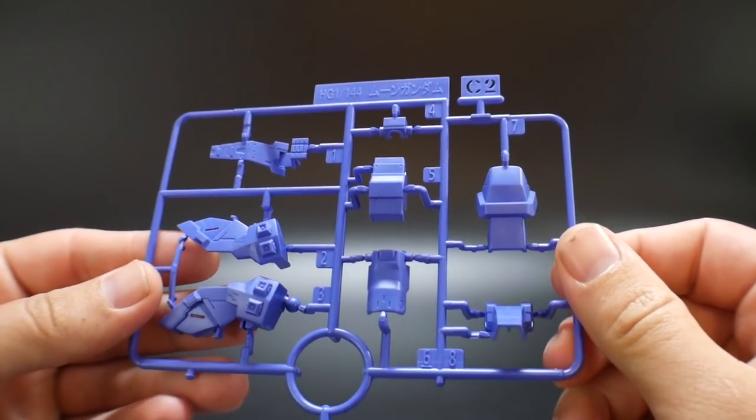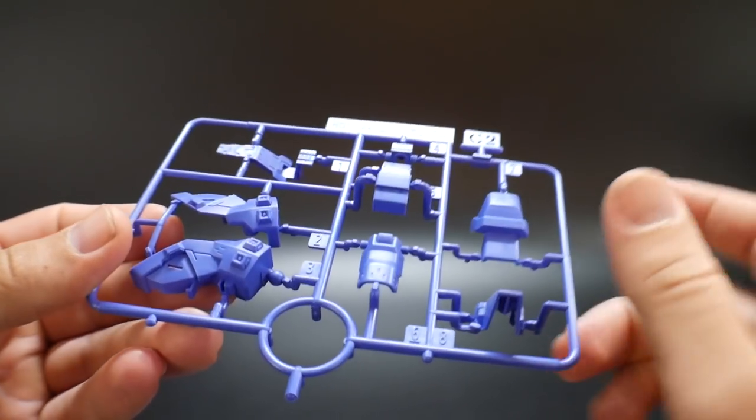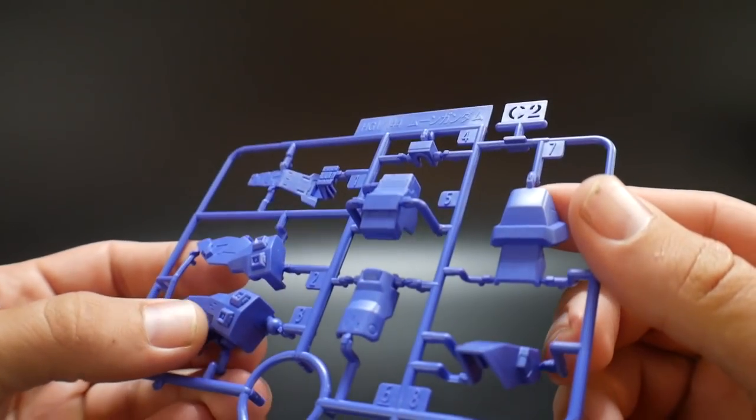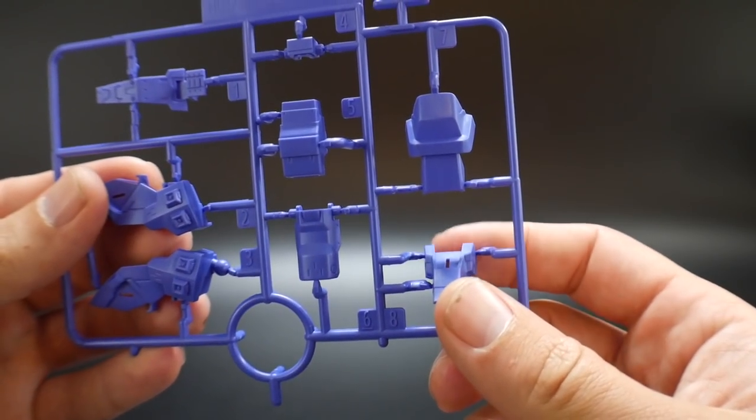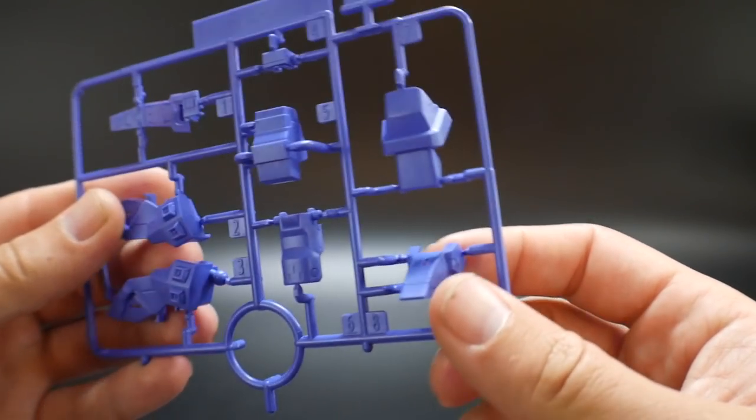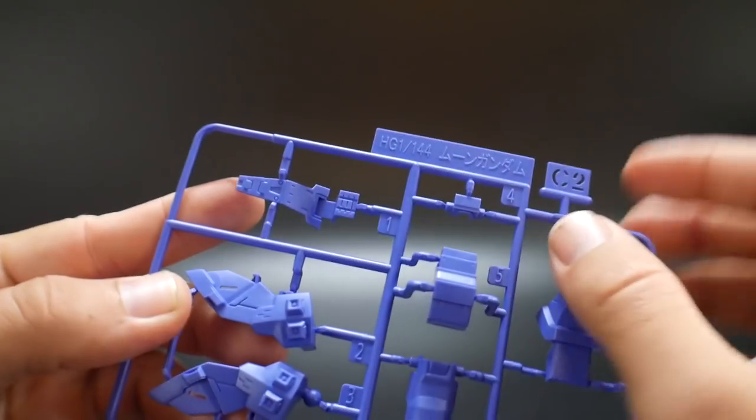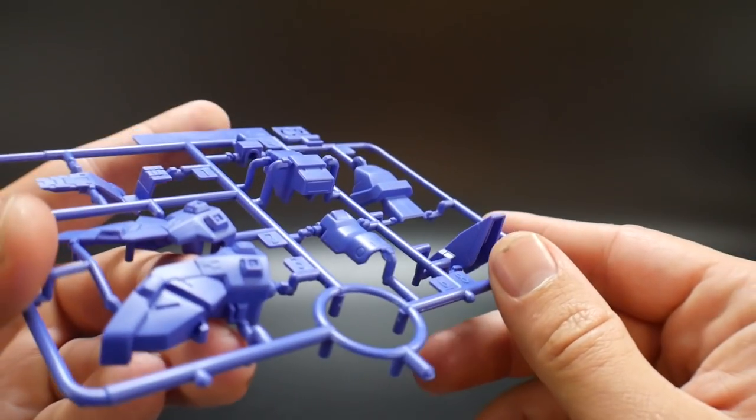And next is going to be runner C2, which is this purple color. This is going to be the shoulders, which has an amazing level of detail, and then just some parts over here. I don't really know what this part is. I think this might be part for the foot if I'm not mistaken. This is definitely going to be the foot, and just overall great level of details.